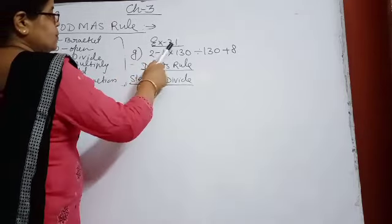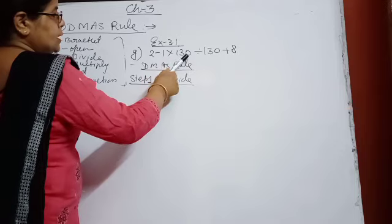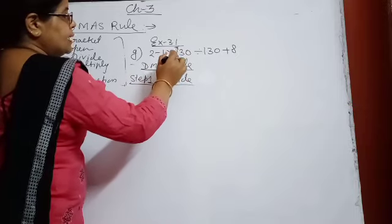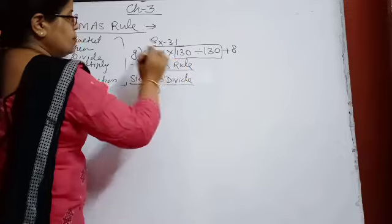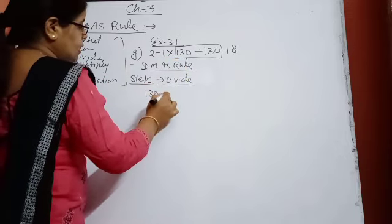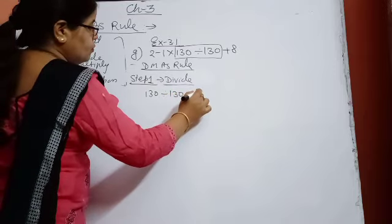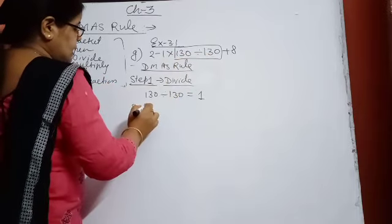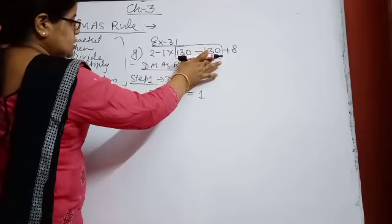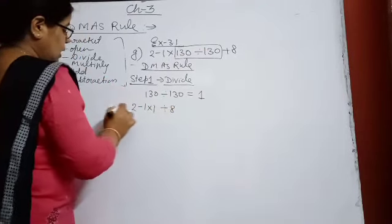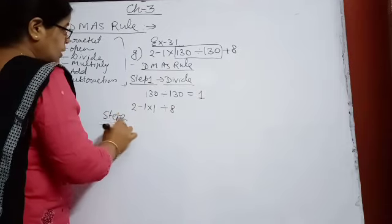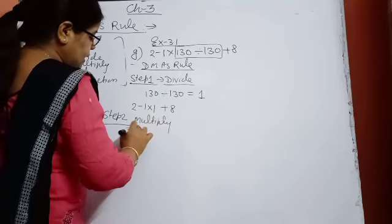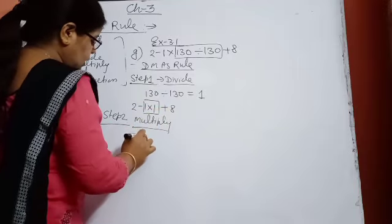Exercise 3.1, question number G: 2 minus 1 into 130 divided by 130 plus 8. Step 1 is divide. You have to see between which two numbers the divide sign is given — here 130 divided by 130. Step 1: 130 divided by 130 equals 1. Now the question becomes: 2 minus 1 into 1 plus 8. Step 2 is multiply: 1 into 1 will be 1.